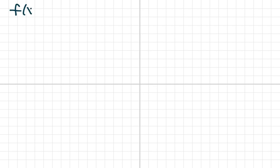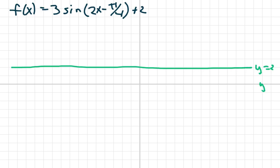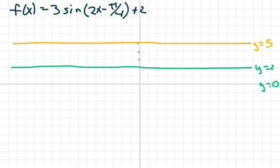Let's get started with the first one: f of x equals 3 sine of 2x minus pi over 4 plus 2. The first thing we do is draw a new center line, which is y equals 2. This is our normal center line. Then we go up 3 because our amplitude is 3. So from our new center line, we're adding 3, which is y equals 5, and subtracting 3, which is y equals negative 1. This is the framework we're going to draw.